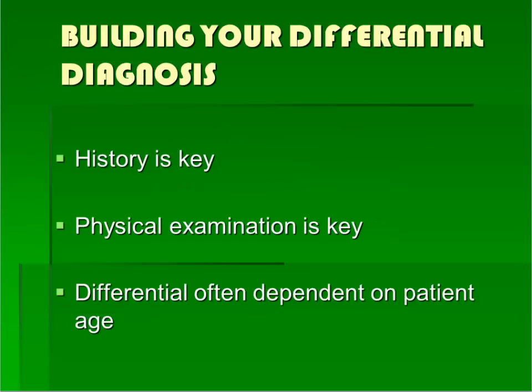Diagnosing a patient who presents with a complaint of abnormal bleeding relies on a thorough history, a focused physical examination, and the understanding that a patient's age will have an influence on the most likely etiologies for abnormal bleeding.